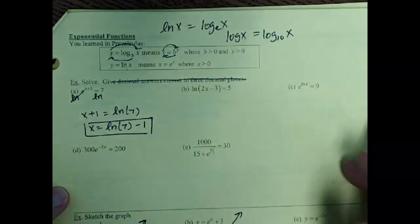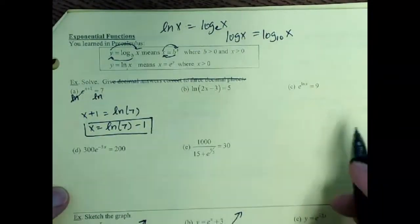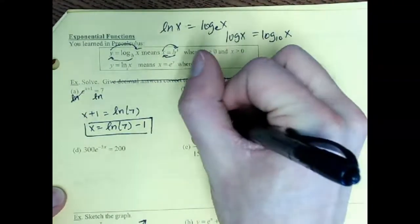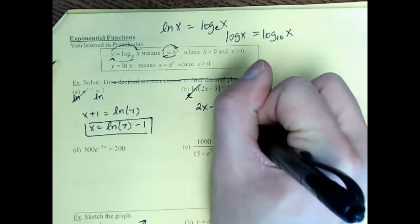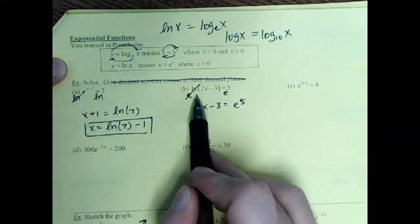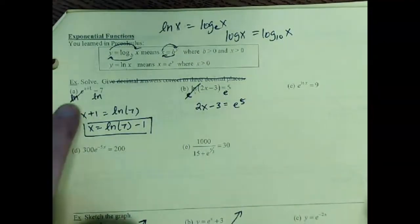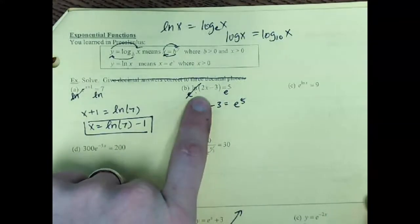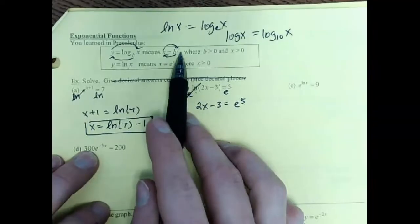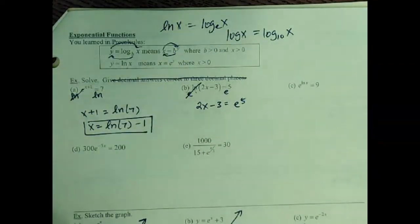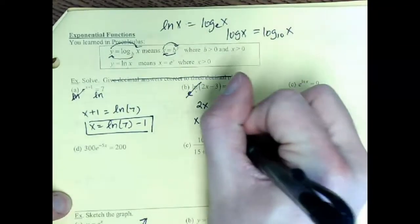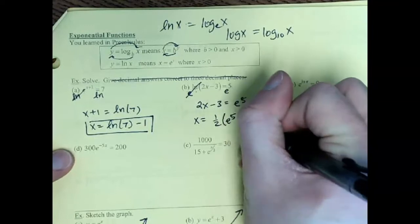Next one: we have a natural log, which is log base e. You can think about exponentiating both sides — those cancel, leaving 2x minus 3 equals e to the 5th. Or if you have log base e, you take e to the 5th power equals the stuff inside. Either way, you're just switching from one form to the other. Then add 3 and divide by 2, giving us one-half of e to the 5th plus 3. Remember, e to the 5th is just some number — that's okay.